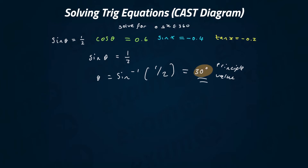So we're going to do something new called the CAST diagram — it's new in A-level, but it's very simple. On the bottom right, we have C for cos; top right, A for all; top left, S for sine; bottom left, T for tan.